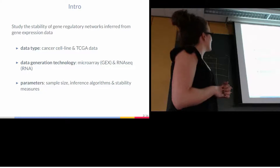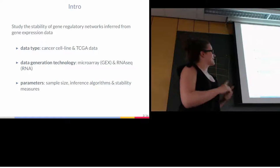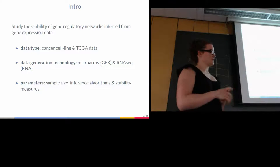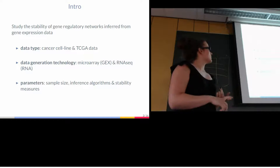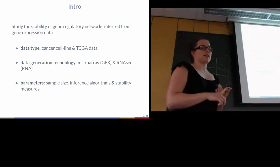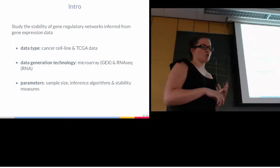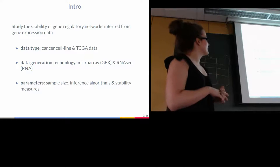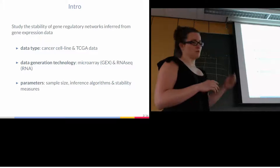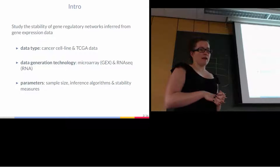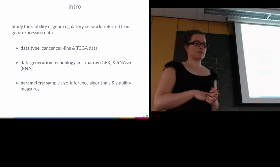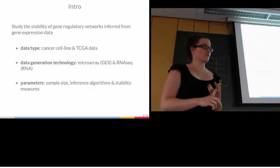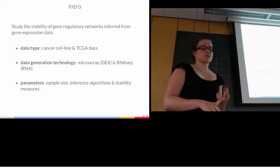So then we looked at available data. We have one cancer cell line where I worked with Benjamin's lab, who has a huge resource on this type of data, and then with Antonio to get the TCGA data. We focused on two main data generation technologies: microarray, which I will abbreviate GEX, and RNA-seq abbreviated NRA. And parameters we want to study are the sample size of the data, the inference algorithms we used, and different stability measures.